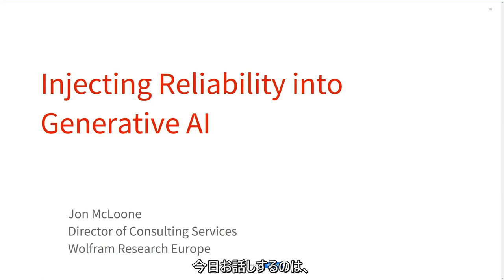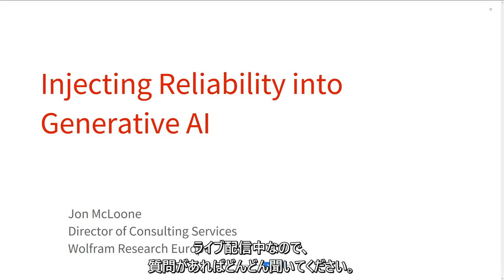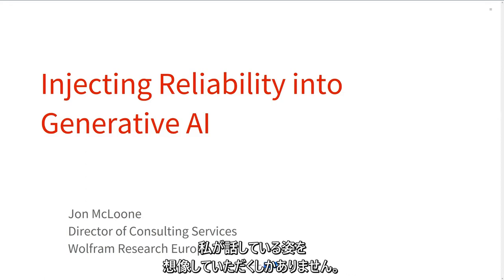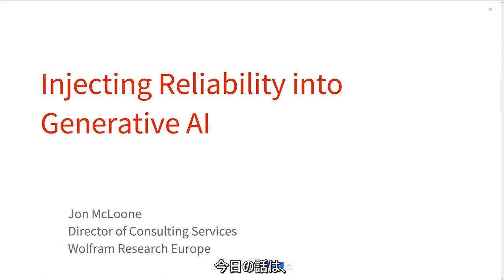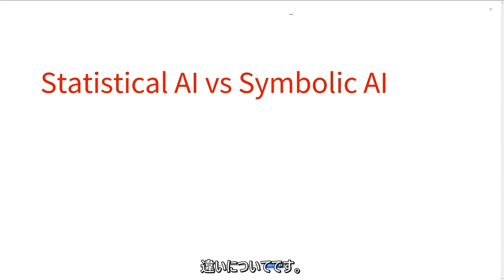Thank you very much. So today, what I want to talk about is ChatGPT and how that fits in with the Wolfram worldview. We are live, so please do ask questions as we go. I'm sorry we're having some technical problems with cameras, so you'll just have to imagine me speaking. But today's talk is fundamentally about the differences between statistical AI and symbolic AI.